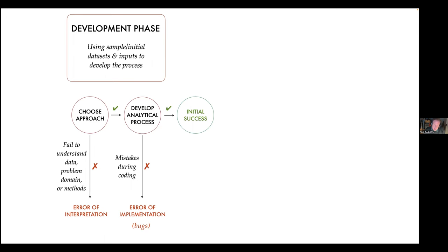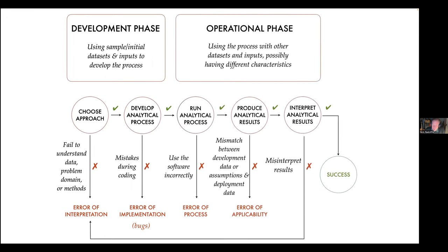That used to be how a lot of analysis ended. But these days we almost always have some kind of operational phase where we push new data through an automated pipeline. That brings new opportunities for things to go wrong — we can use the software incorrectly (errors of process), or there can be a mismatch between the development data and the deployment data (errors of applicability).